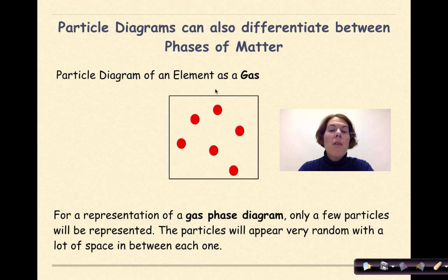Now we have the particle diagram of an element as a gas. Notice here, for a representation of a gas phase diagram, only a few particles will be represented because we're assuming that the rest of the particles that we saw in the previous diagram are now out of our box, out of the picture.